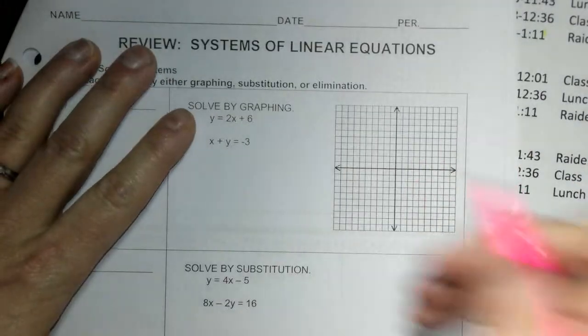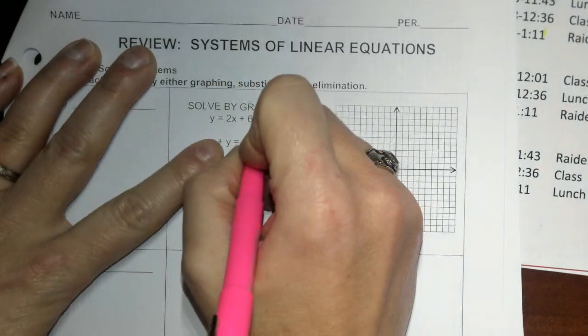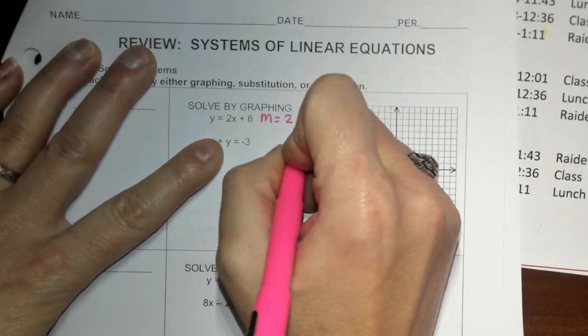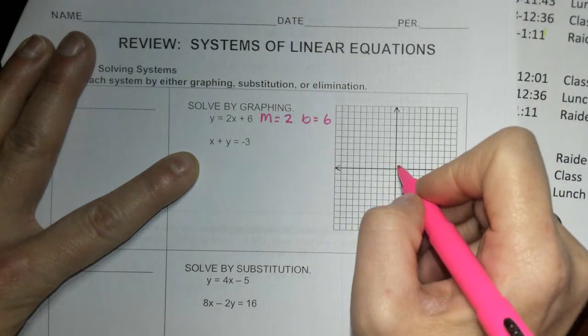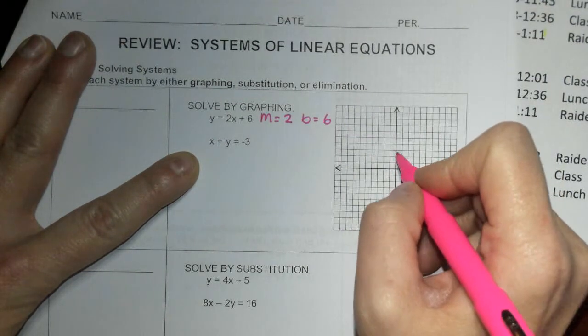It says solve each system by either graphing, substituting, or elimination. Well, they do give us a graph here, so let's go ahead and graph it. And this one, our m is 2 and our b is 6. I'm going to go ahead and graph that line.